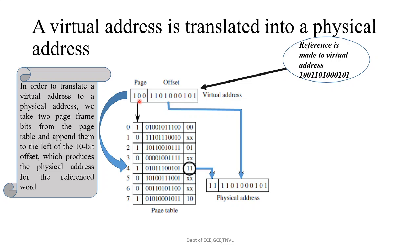This is the virtual address. The most significant 3 bits are used to search the page — here it is 1 0 0, searching page 4. A reference is made to the virtual address: 1 0 0 1 1 0 1 0 0 0 0 1 0 1. The page is identified and it is in the corresponding page frame, so the present bit is set to 1. The page frame bits are appended to the offset of the virtual address — the offset is 1 1 0 1 0 0 0 0 0 1 0 1. Along with the page frame identified for this page location in virtual memory, this is appended and the physical address is calculated.